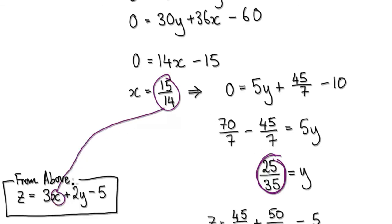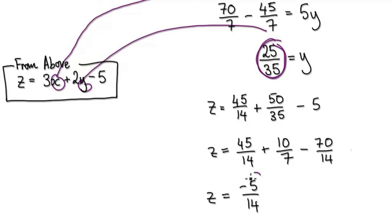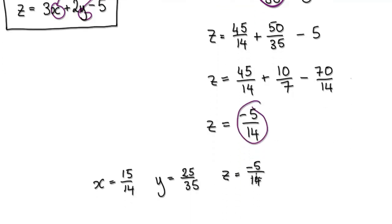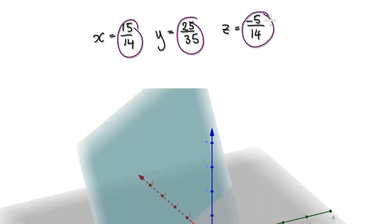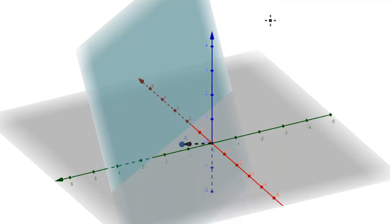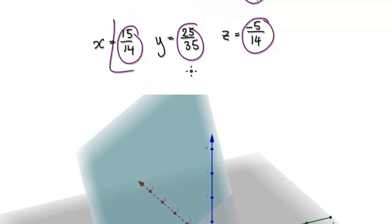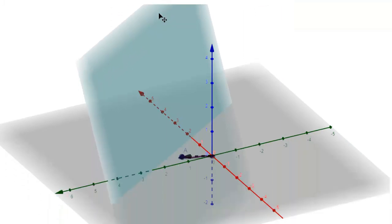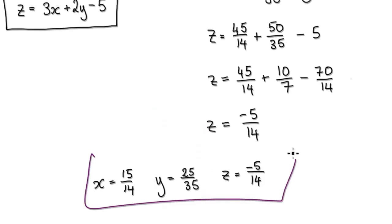Once we know X and Y, we can work out Z by substituting back into the plane equation. So the Z value is determined. We now know the X, Y, and Z location of the closest point. If you punch this into a 3D graphical plotter it confirms the location. That point gives us the shortest distance from the origin to the plane, and that's your final answer.